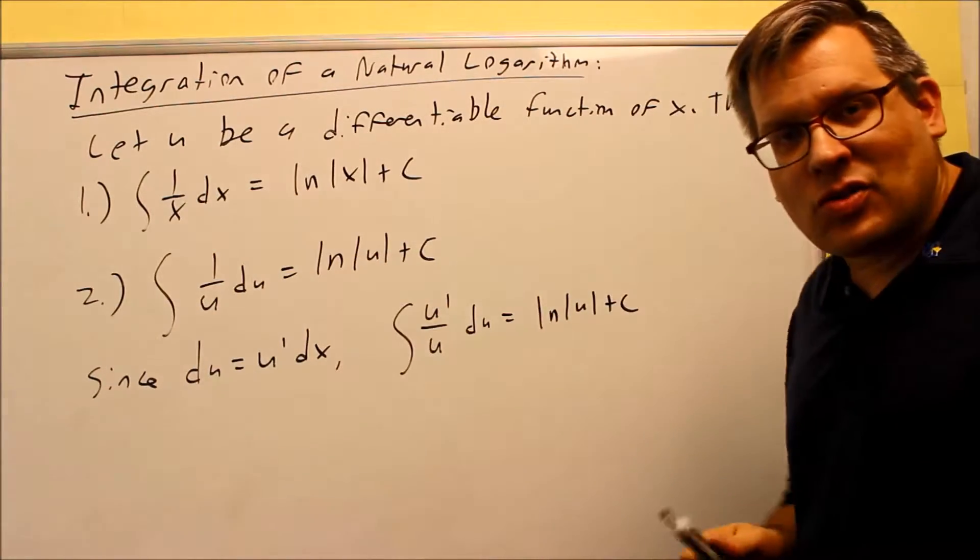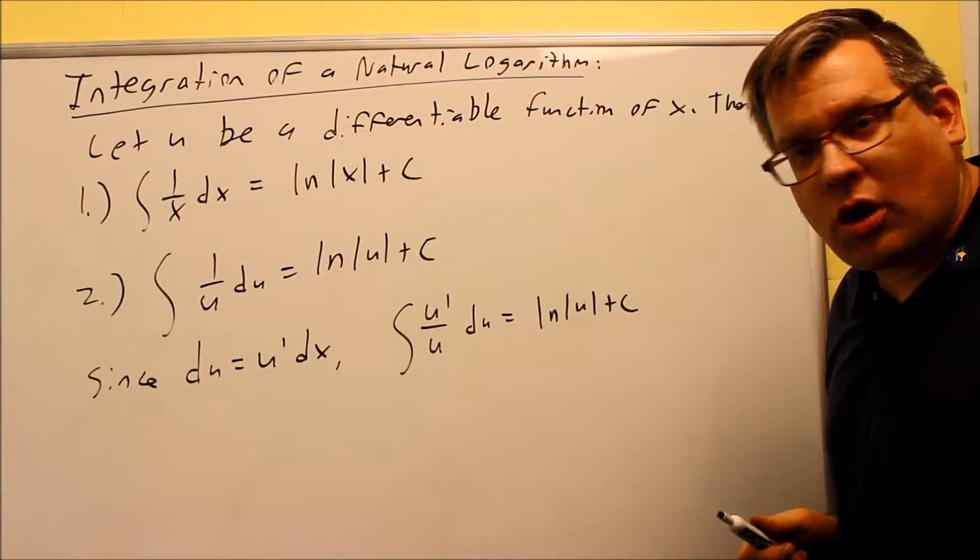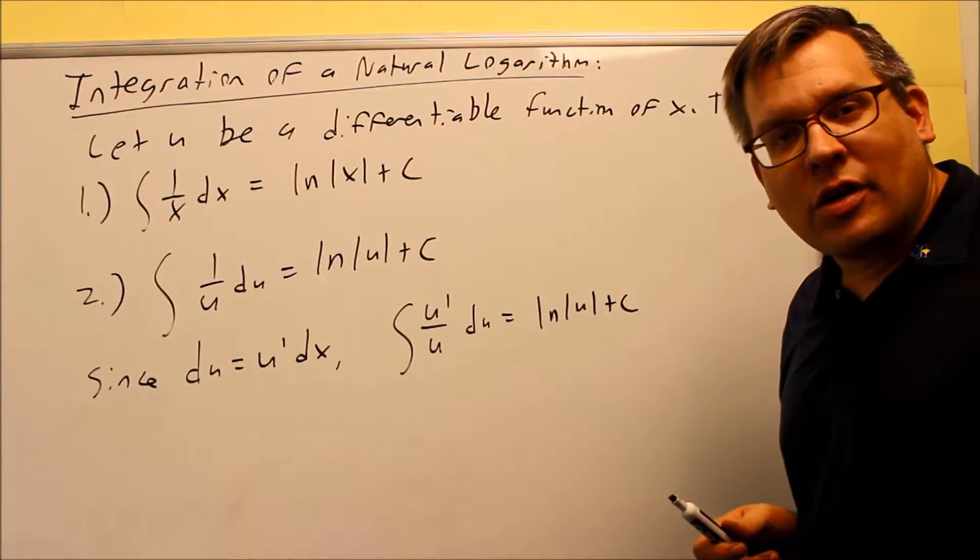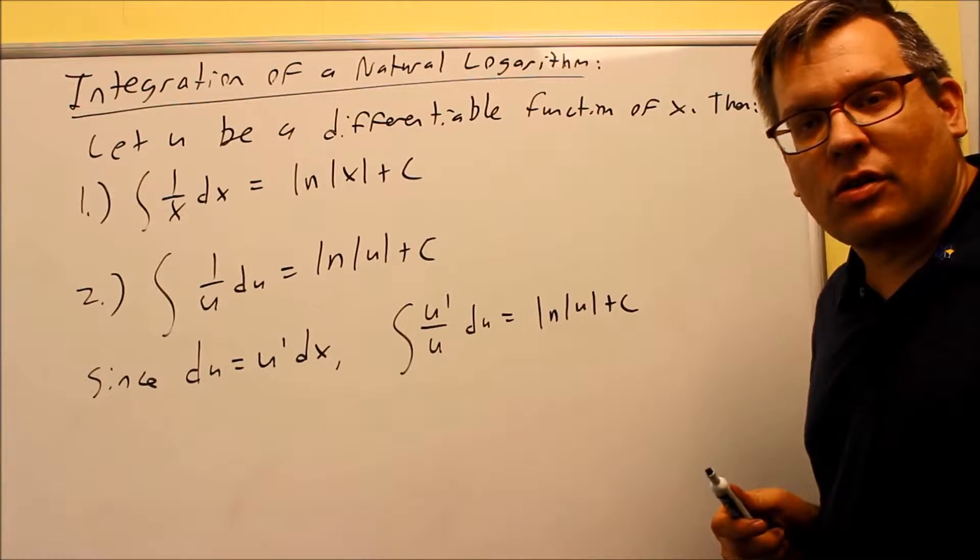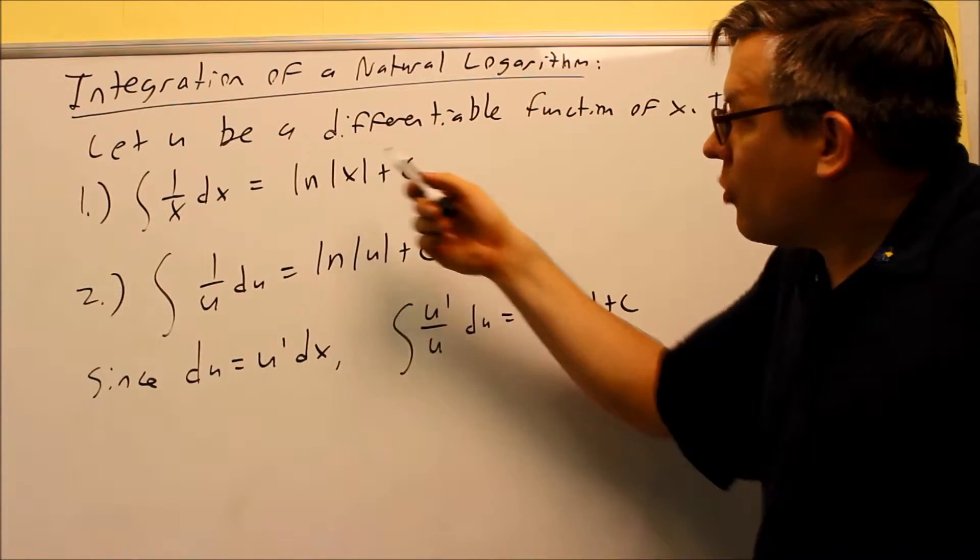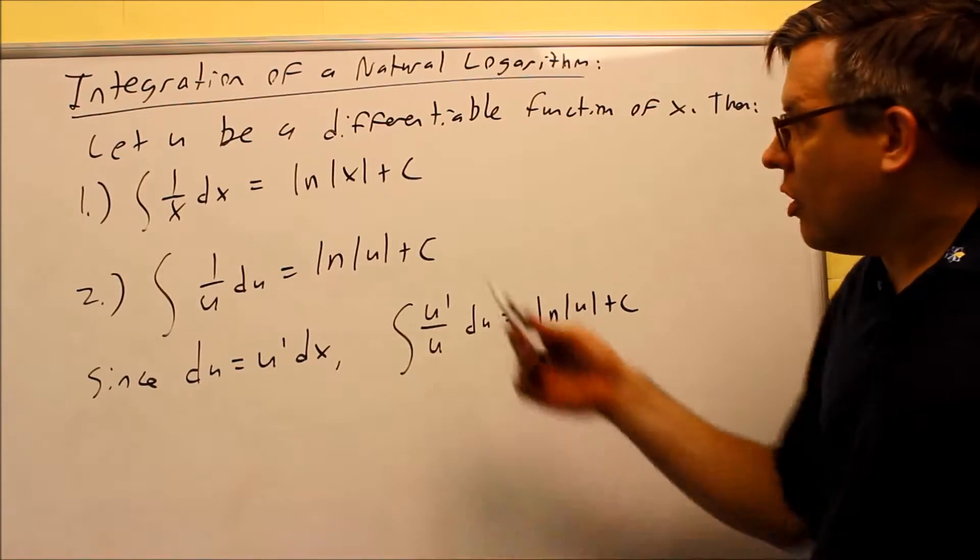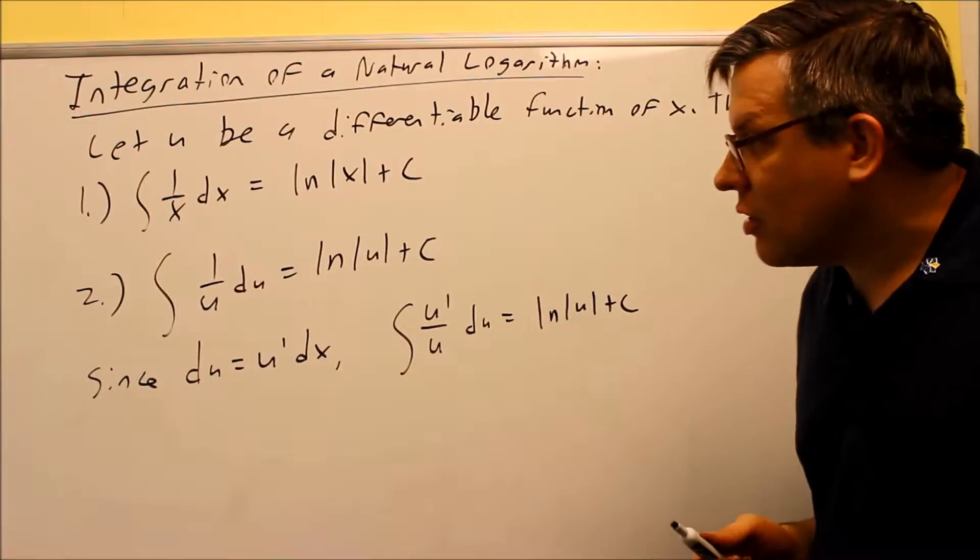If you have 1 over x, instead of using inverse power rule, we're going to automatically change it into natural log of absolute value of x. The reason why the absolute values are there is because of the domain of natural logs. We talked about that earlier in this class, that the domain has to only be values greater than but not equal to 0, and the absolute value will guarantee you have positive numbers only there going into that.